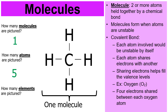How many elements are pictured? I hope you said two. H is the element hydrogen — that's one. C is the element carbon — that's two. Now, this particular molecule would have the formula CH4 — one C in the middle and then four H's connected to it. CH4. This is the molecule known as methane.